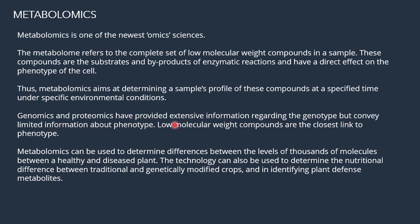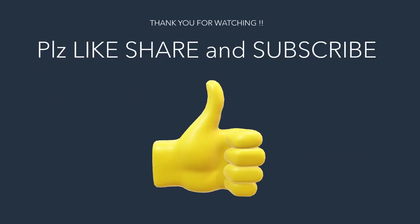Genomics and proteomics have provided extensive information regarding genotype but conveyed limited information about phenotype. This is where metabolomics has an advantage — it gives information about phenotypes. Metabolomics can be used to determine differences between the levels of thousands of molecules between a healthy and diseased plant. It can also be used to determine nutritional differences between traditional and genetically modified crops, and in identifying plant defense metabolites.